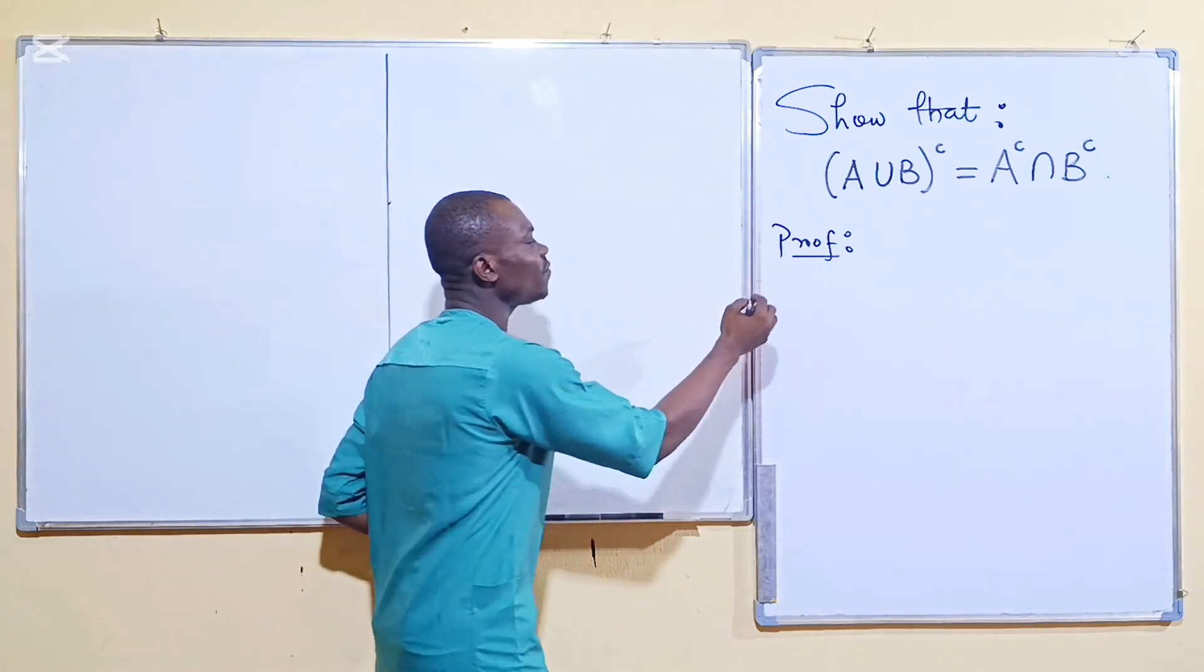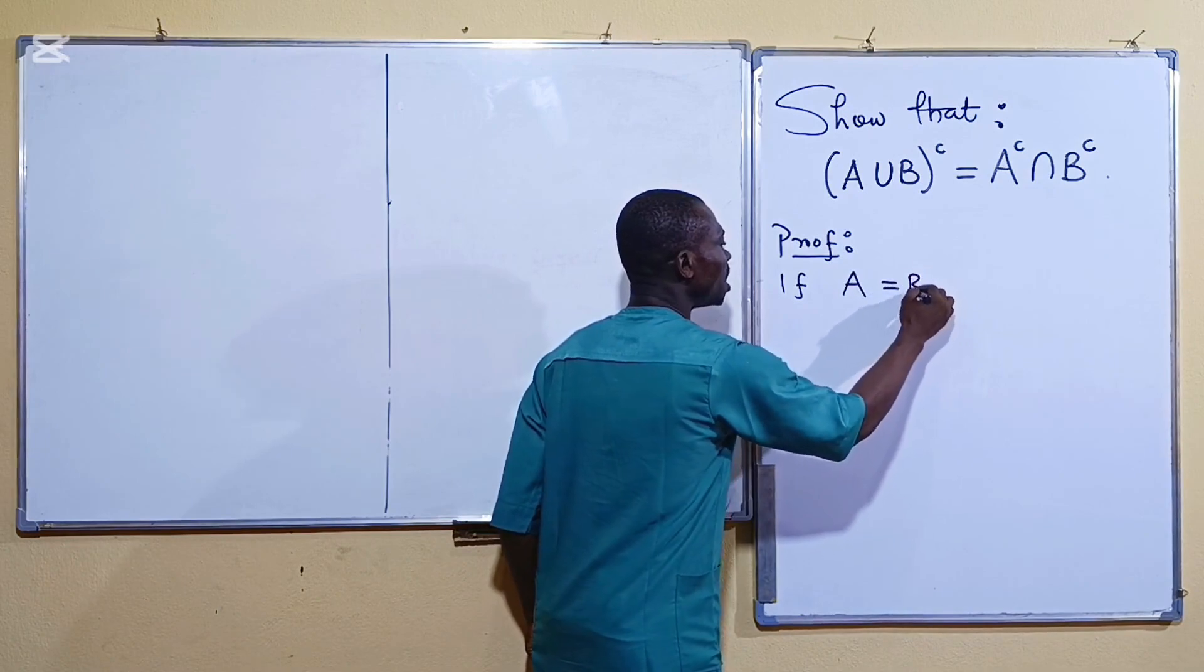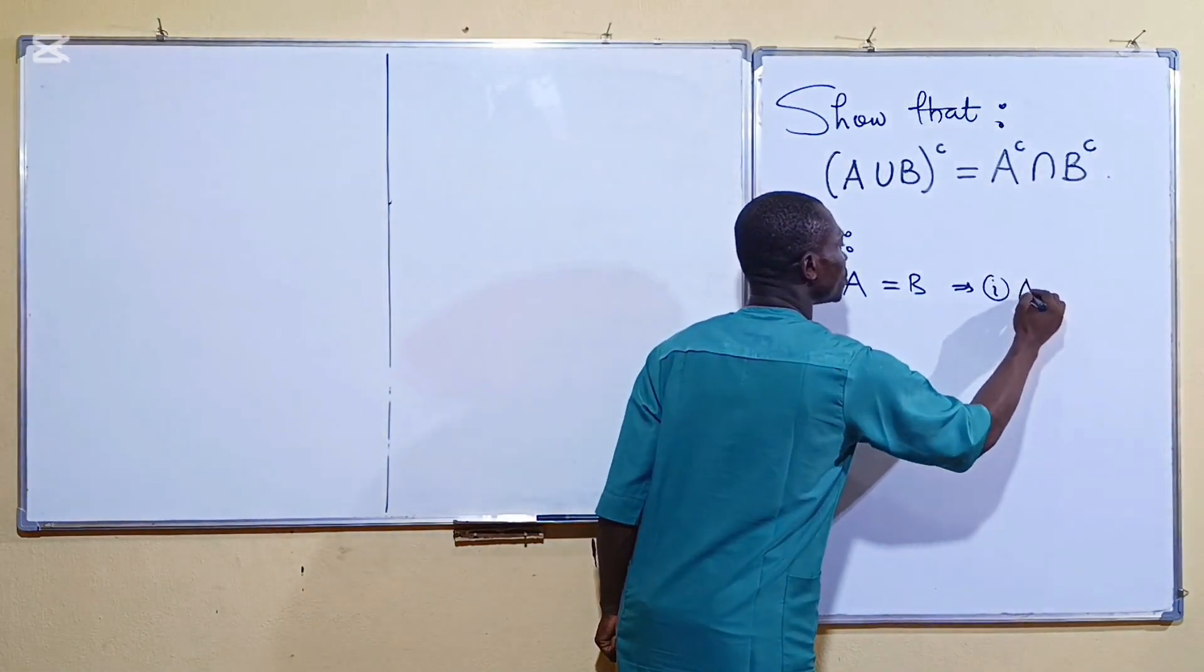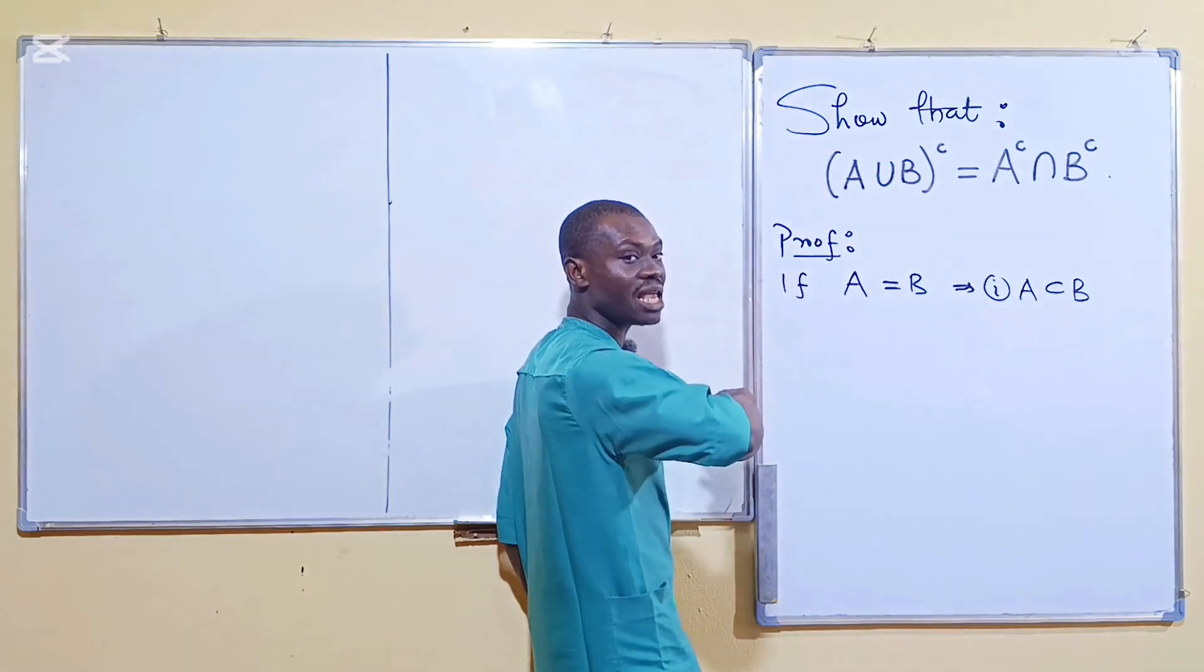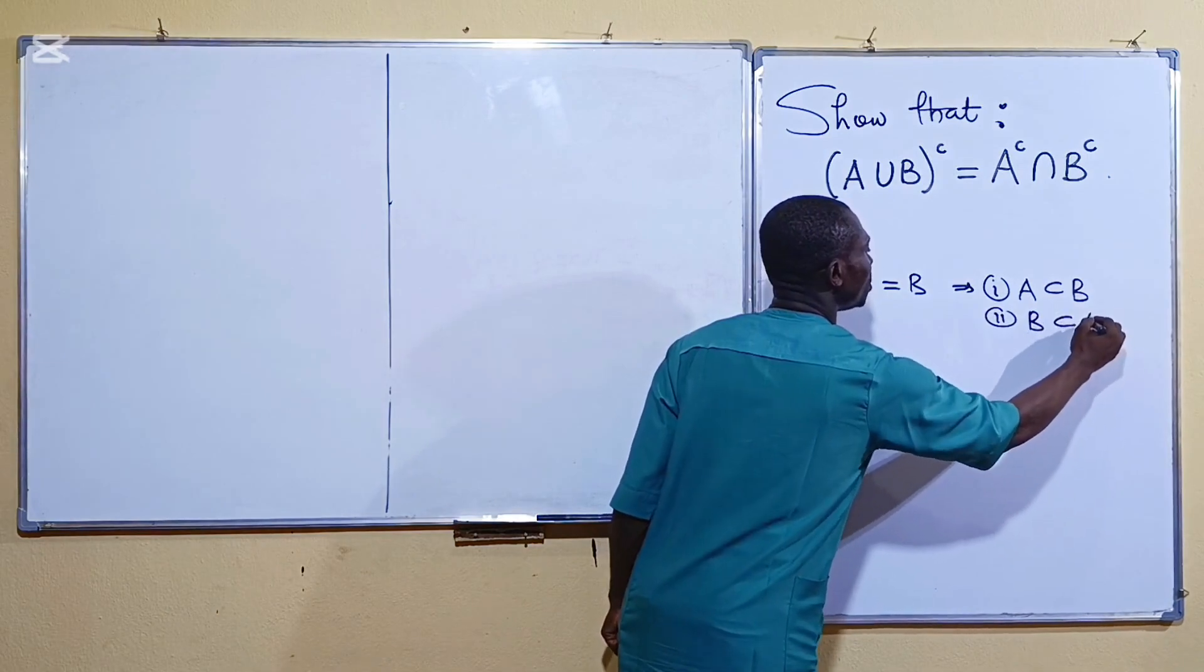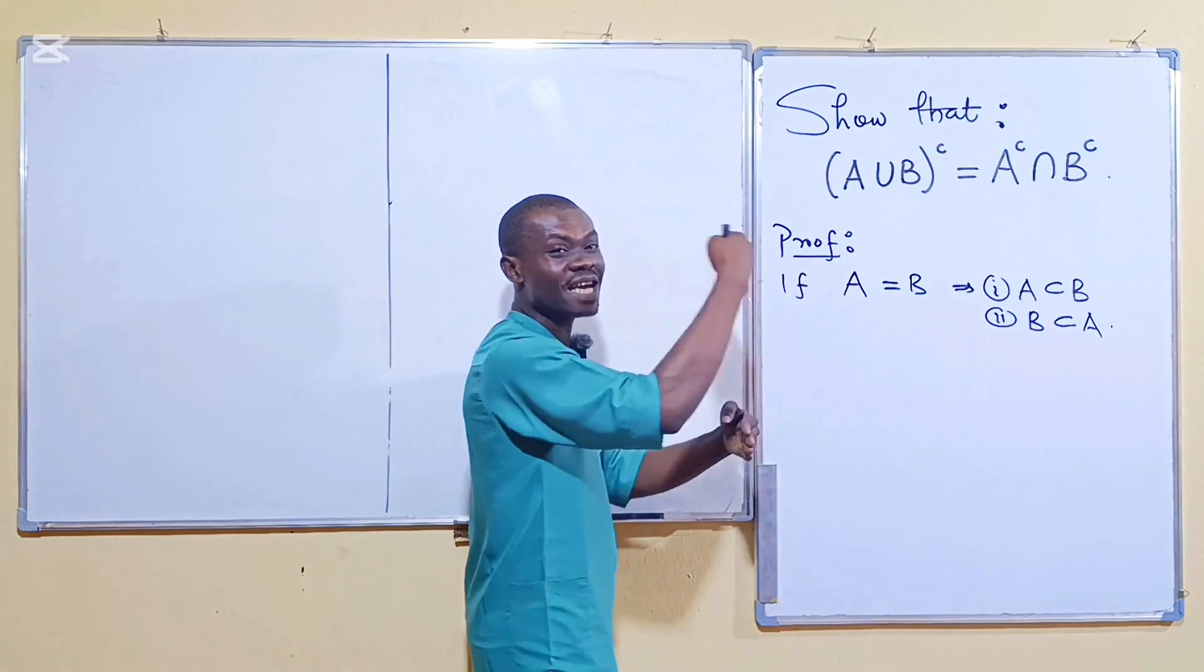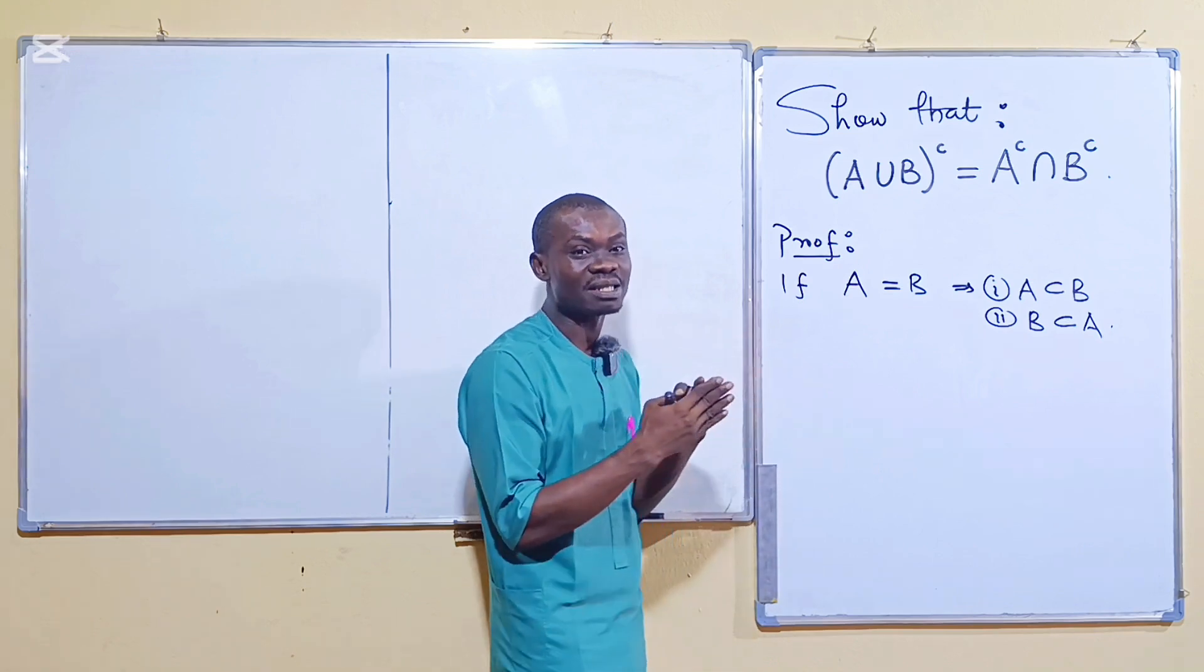If I want to show that A is equal to B, it implies that two things must happen. One, A must completely be a subset of B. That means all the elements in A must be in B. And number two, all the elements in B must also be in A. So once you are able to show that all the elements in A are in B and all the elements in B are in A, you have established that the two of them are equal.